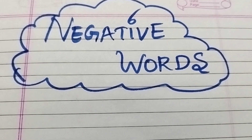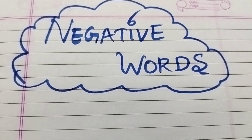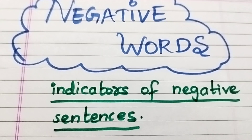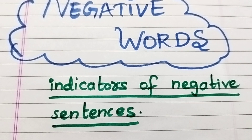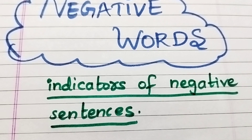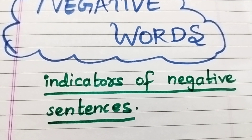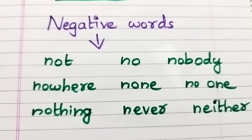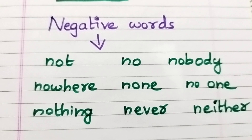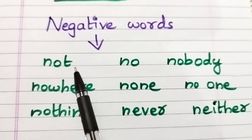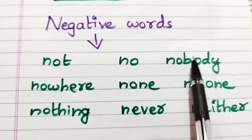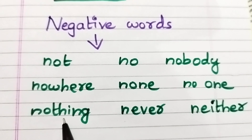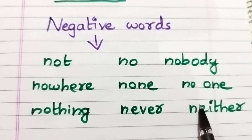In this video I'm going to explain certain negative words in English. Negative words are indicators of negative sentences — if you find a negative word in a sentence, that is a negative sentence. These are the commonly used negative words in English: not, no, nobody, nowhere, none, no one, nothing, never, neither.